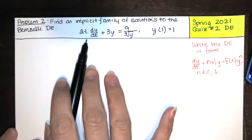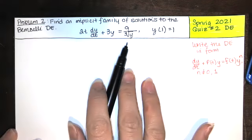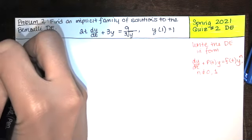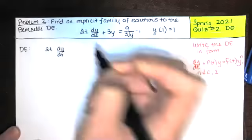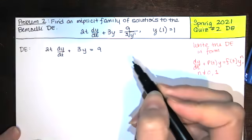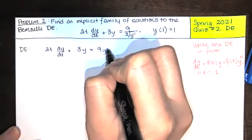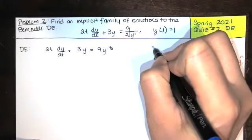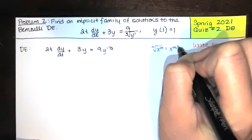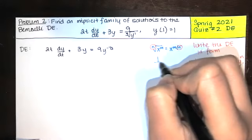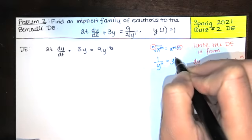So what we want is to write this differential equation in this form, and it's almost there. We just need a coefficient of one in front of the dy/dt, so we will divide every term by 2t. I want to write that cube root of y as y to the one-third power. But if we bring that up to the numerator, it'll be y to the negative one-third power.